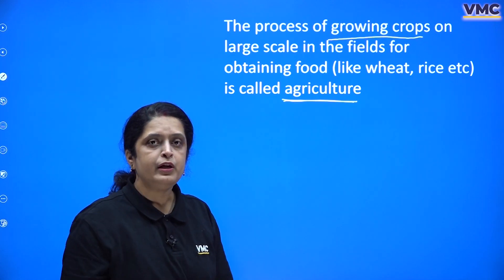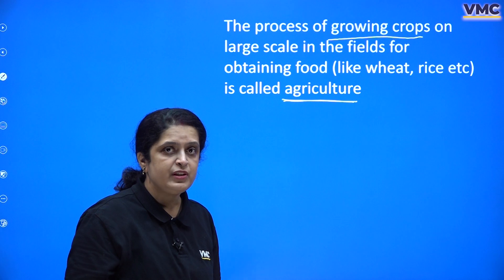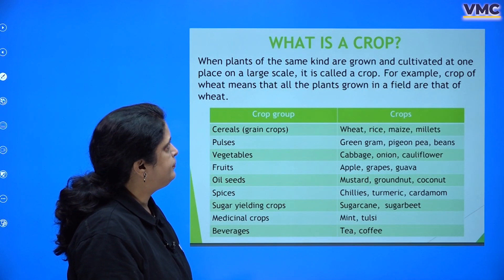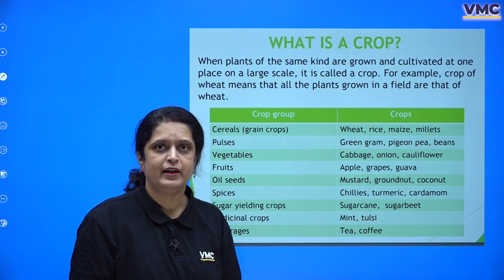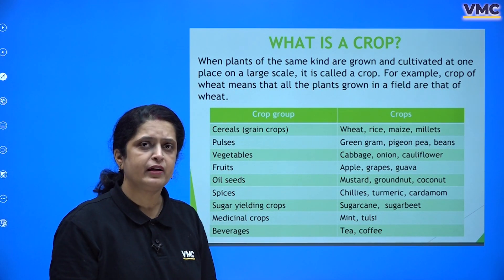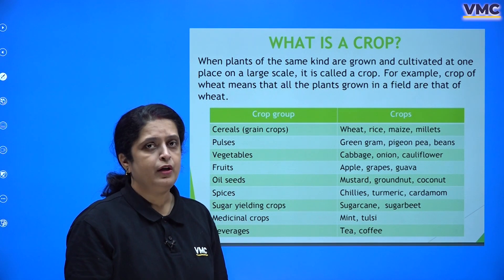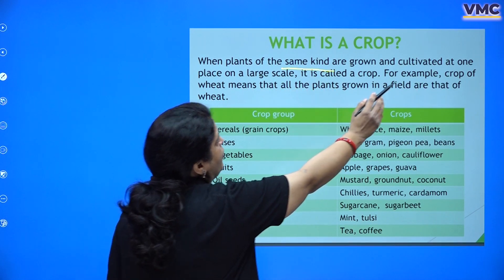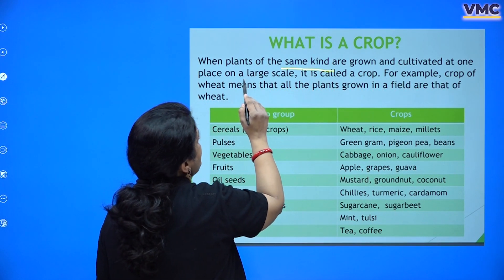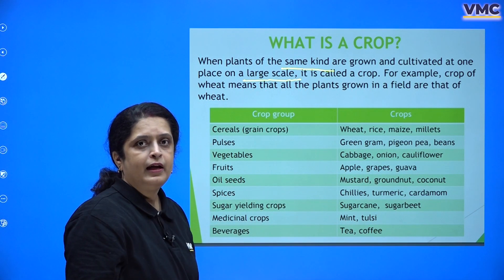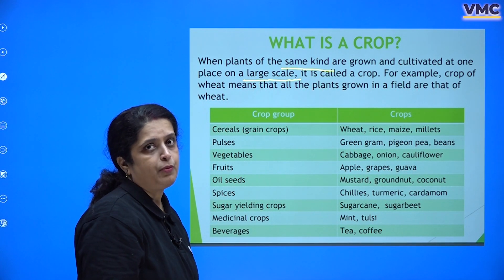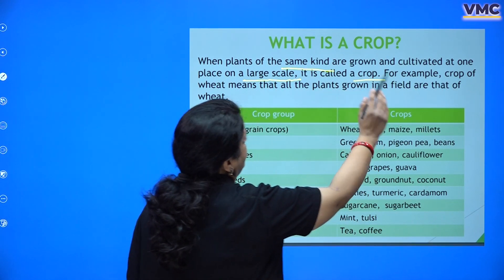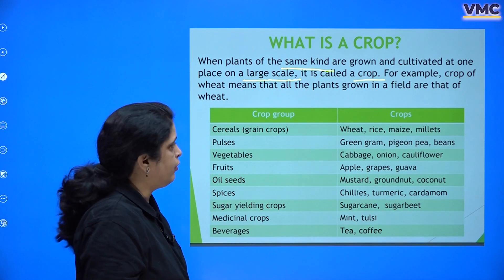When we grow one or more varieties of food items in plenty of numbers, we call it agriculture. What is a crop? If you have a tomato plant in your backyard, is that a crop? No, it is not. When plants of the same kind are grown and cultivated at one place on a large scale — at least supporting one family — it is called a crop. So there are many groups of crops.